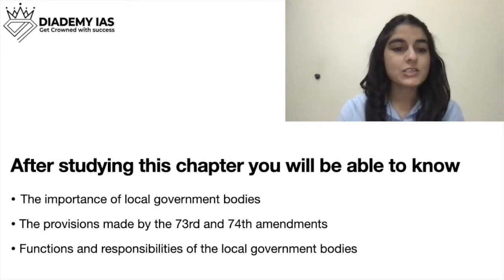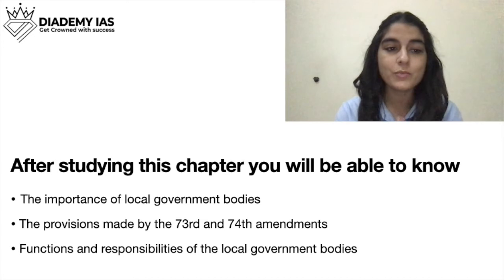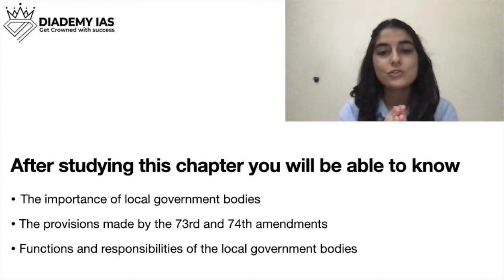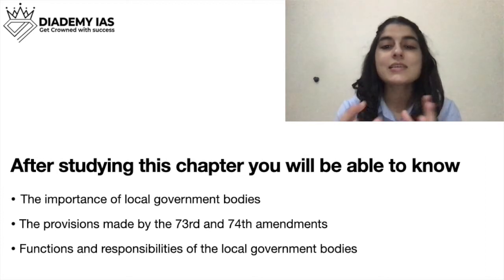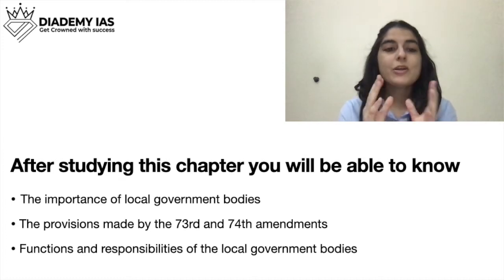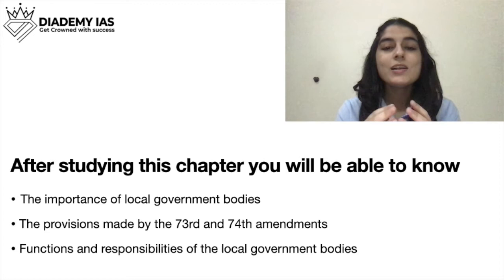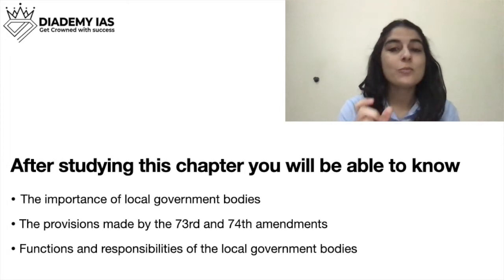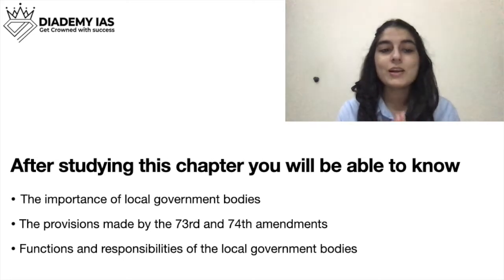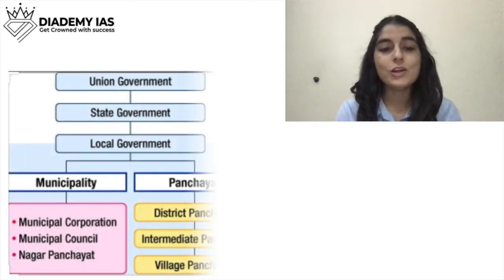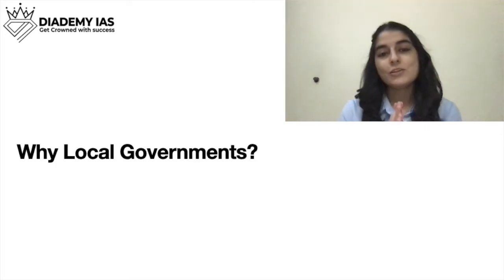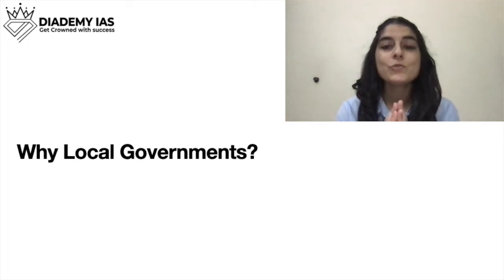In the previous chapters we have covered central government, legislature, executive, judiciary, and also various state government bodies. Now in this chapter we will be covering local governments, the provisions made by the 73rd and 74th amendments — which are very important from local governments' point of view — and also the functions and responsibilities of local government bodies. There are different levels of government.